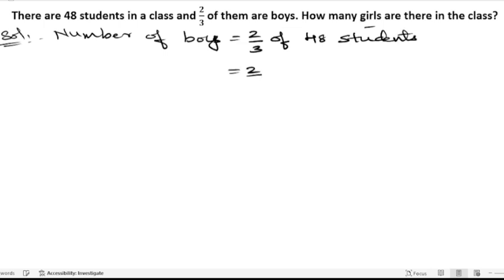So 2/3 times 48. Dividing 48 by 3: 3 into 4 is 1 with 1 left, 3 into 18 is 6, giving us 16. Then 2 times 16 equals 32. So we got the boys.